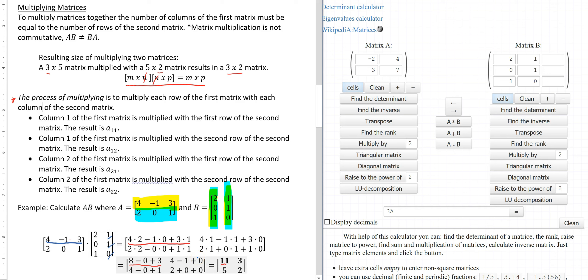After I multiplied the first row with each column, I took the second row and multiplied it with each column one at a time. And the results were 5 and 2.